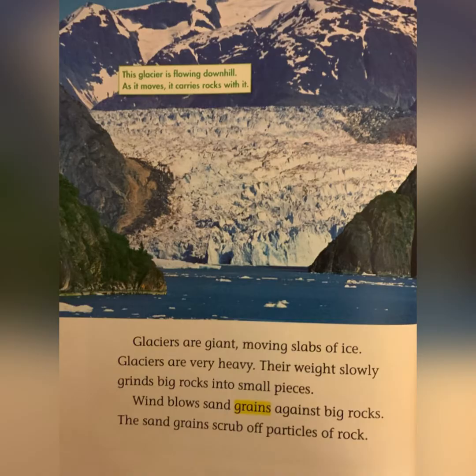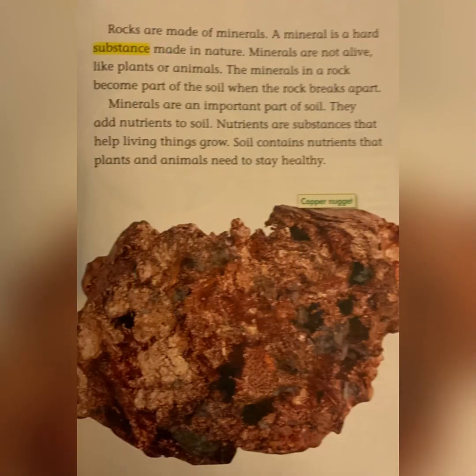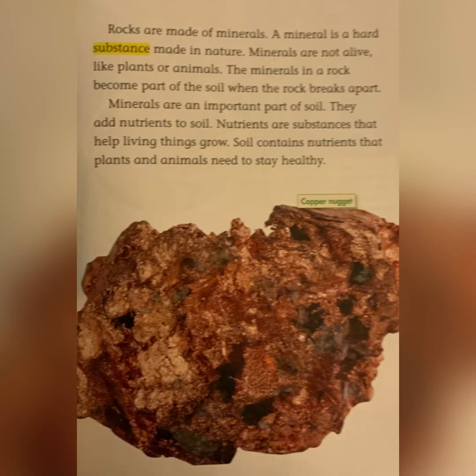Wind blows sand grains against big rocks, and the sand grains scrub off particles of rock. Rocks are made of minerals. A mineral is a hard substance made in nature. Minerals are not alive like plants or animals. The mineral in a rock becomes a part of the soil when the rock breaks apart. Minerals are an important part of soil — they add nutrients to soil. Nutrients are substances that help living things grow. Soil contains nutrients that plants and animals need to stay healthy.